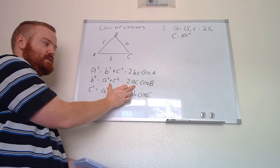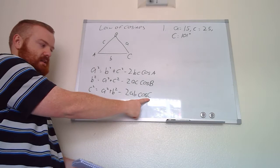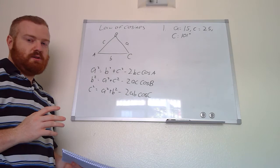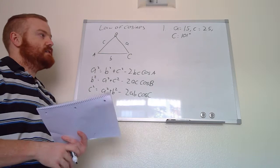Similarly for the next version, if we want side b, we have angle B on the right, and the other side lengths are a and c. Finally, the last version uses side c and angle C, with the other sides being a and b. If you already have one of those corresponding angle-side pairs, you do not need the Law of Cosines — you can just use the Law of Sines.